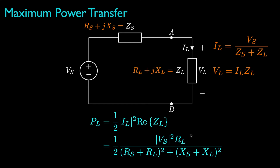To maximize the average power at the load, we'd like to pick the load impedance — or equivalently, the load resistance and load reactance — so that P_L is as large as possible. The load reactance only appears in the denominator, and because the sum of the source and load reactances is squared, that term can only make the power smaller than it would be if X_S plus X_L equals zero. Therefore, we want the load reactance to be the negative of the source reactance.